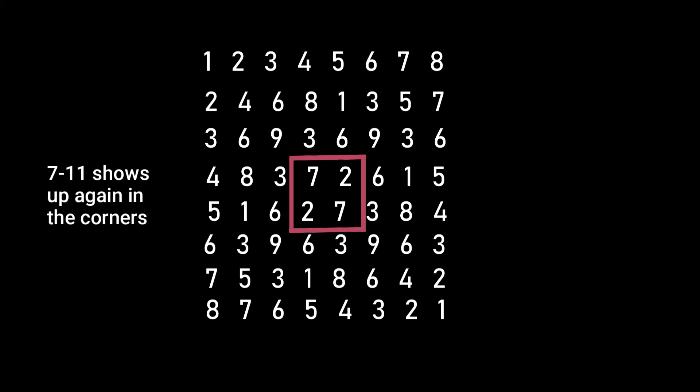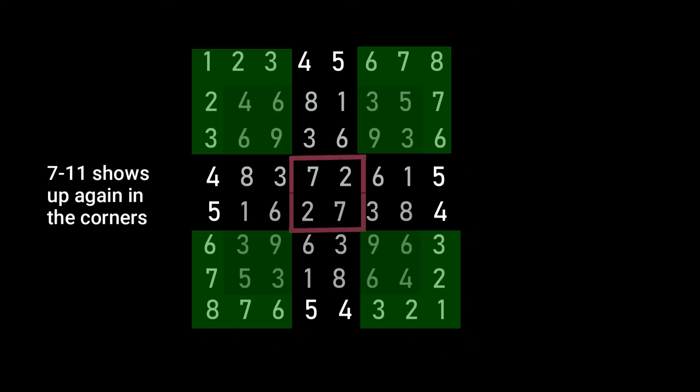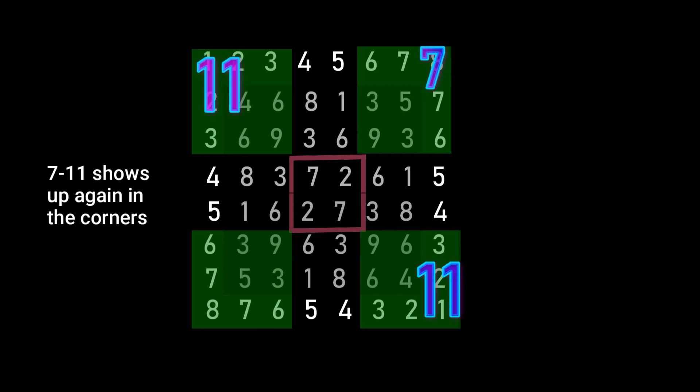7 and 11 shows up again in the corners. 1 plus 2 plus 3 plus 2 plus 3 equals 11. 6 plus 7 plus 8 plus 7 plus 6 is 34 — and 3 plus 4 is 7.